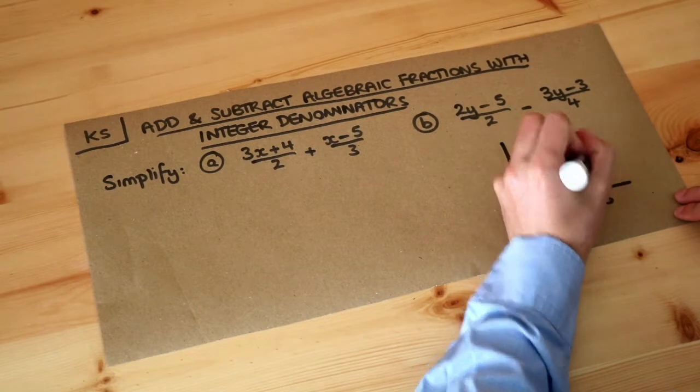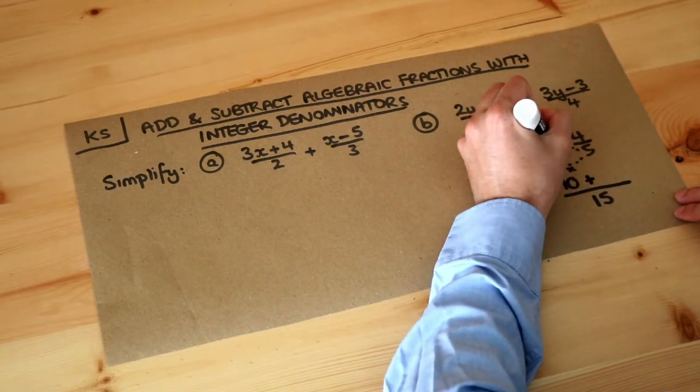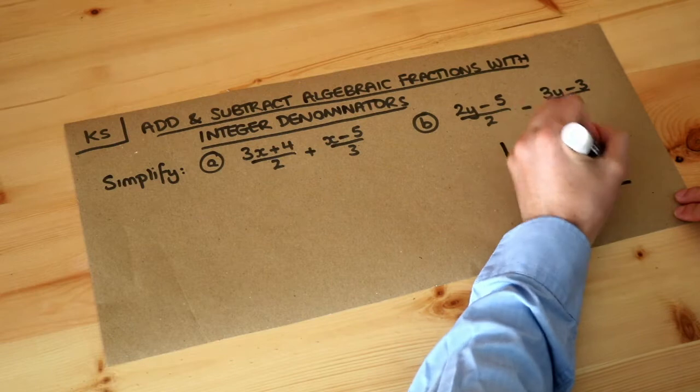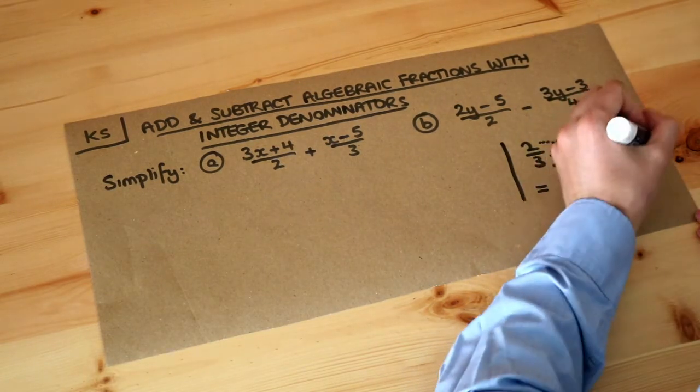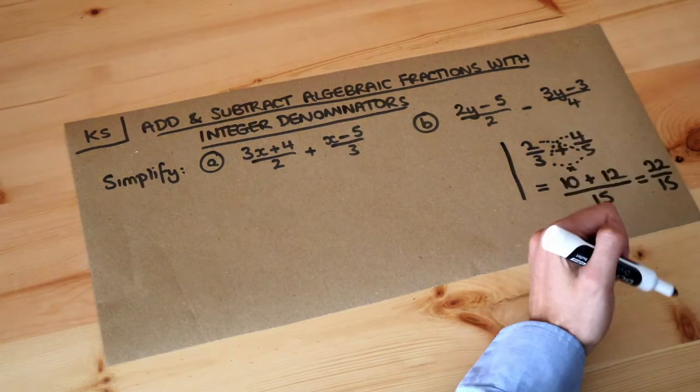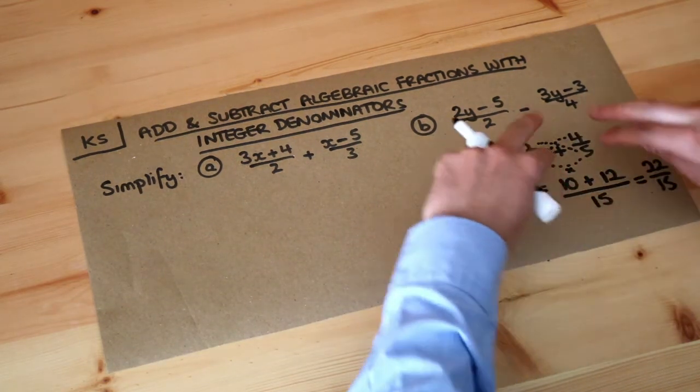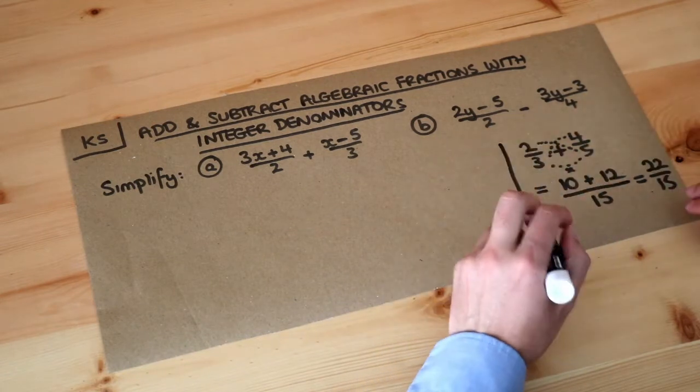And then the plus in the middle, and then the four gets multiplied by the three. So four times three is twelve, and now we can add these and that would be twenty-two over fifteen. And that was a quick way of basically scaling each of the fractions, so the denominators are the same.